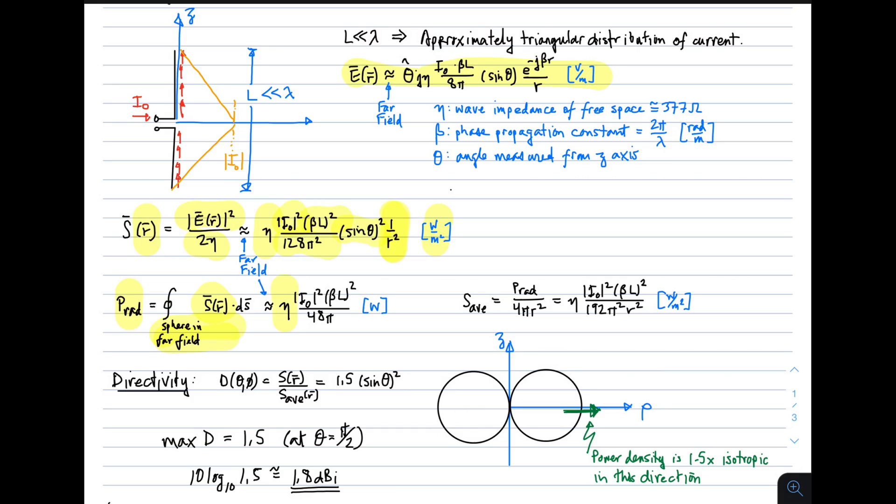Doing that, we get eta, magnitude of the current squared, beta L squared, over 48 pi. That has SI base units of watts.